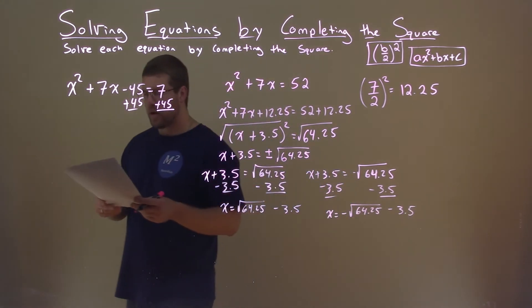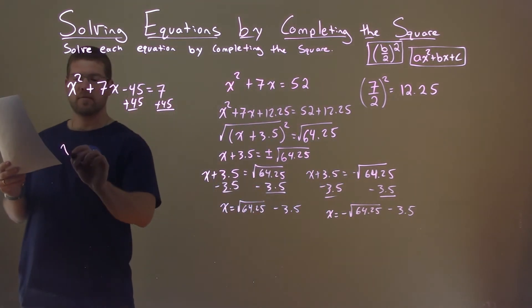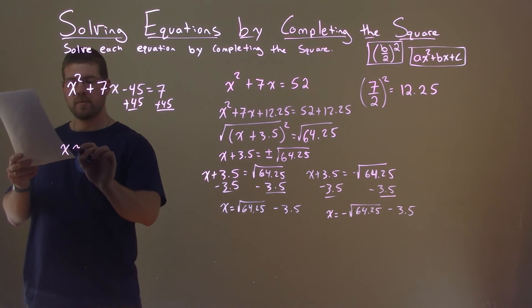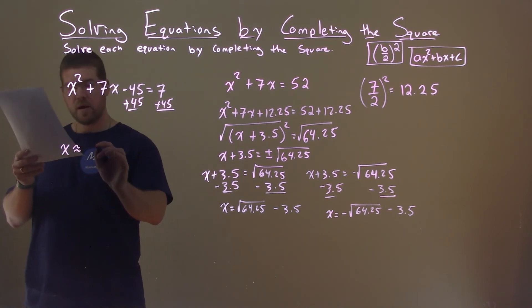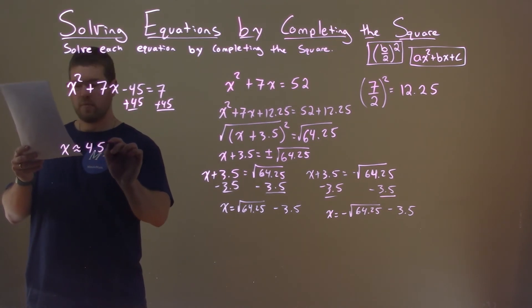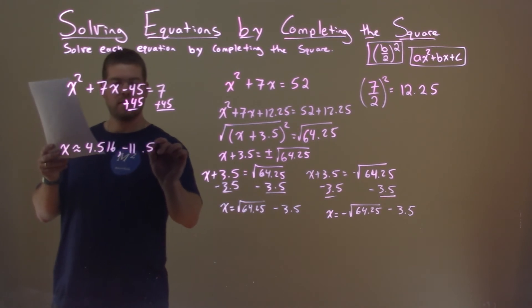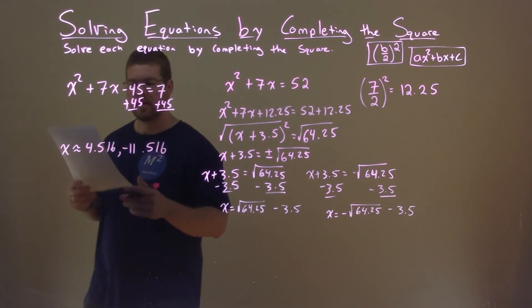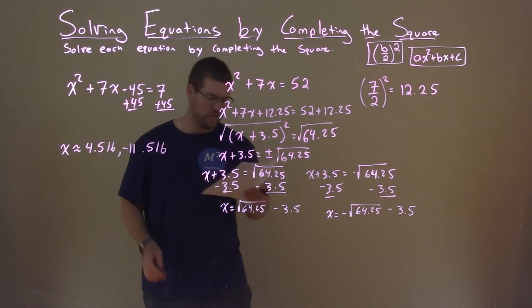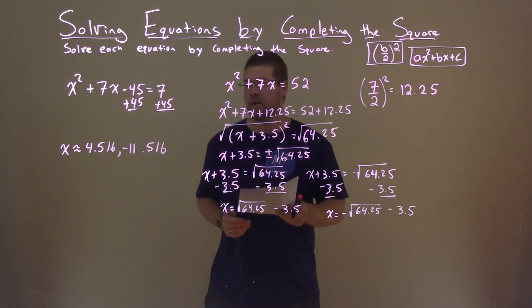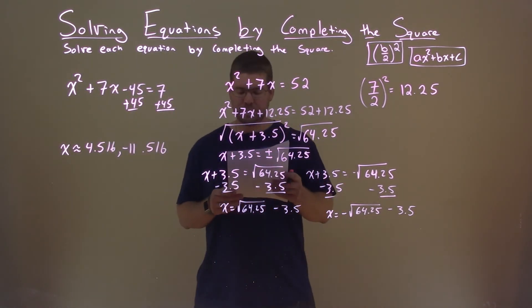So those two values come out to be, decimal approximated and rounded, 4.516 and negative 11.516. And so those two are our final answer.